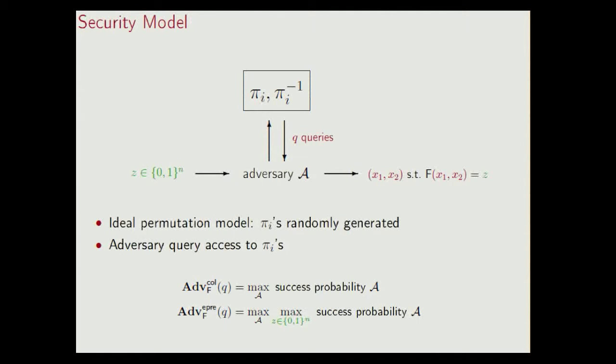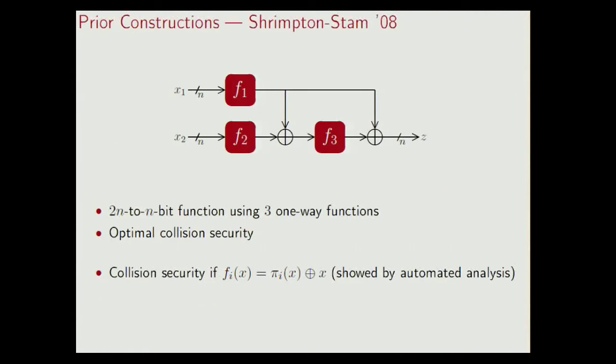So let's go back to 2N to 1N compression functions. Several works already appeared in the literature. One construction is by Schrimpton and Stamm. They looked at a design that takes two n-bit inputs x1, x2, and an n-bit output z, and it uses three one-way functions f1, f2, and f3. It's proven to be optimally collision secure if the fi's are random one-way functions. And by an automated analysis, it has been shown that this result still holds if you replace the one-way functions by permutations with feed forward.